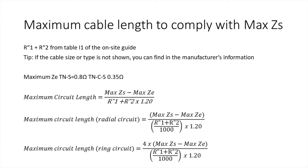There's a slight difference if it's a ring circuit. You'll notice in the example at the bottom, there's a multiplier of four at the beginning of the equation. This is to take into account the loop of the ring circuit. So that equation would be: four multiplied by (maximum ZS minus maximum ZE) divided by (R1 plus R2 divided by 1,000), and then multiplied by 1.2.